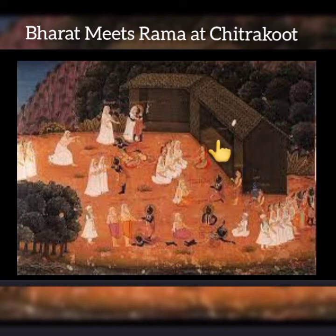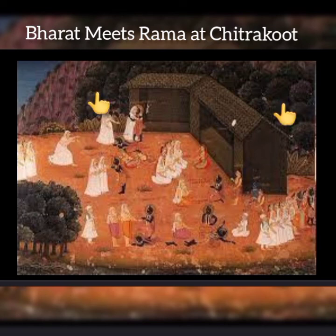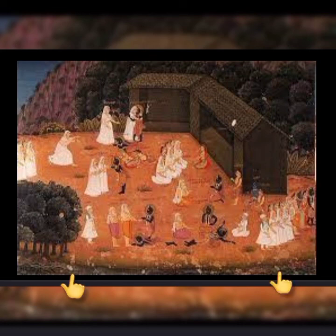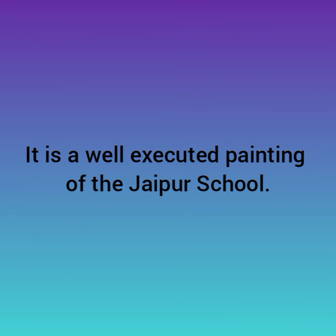Rama's cottage is dimly seen in the right-hand corner, and there is a bunch of banana grove. Beyond that, there is a profusion of green in the whole painting for the background. In the foreground, there is a pond-like stretch of water, possibly a part of the river Saru. Blooming lotuses are depicted, and the colors used are green, blue, yellow, and white, very dexterously. It is a well-executed painting of the Jaipur school.